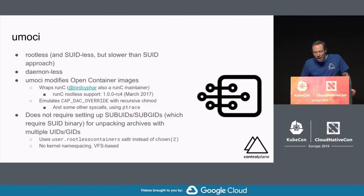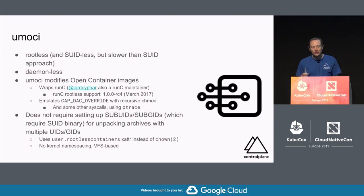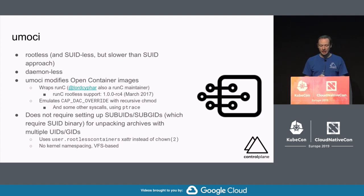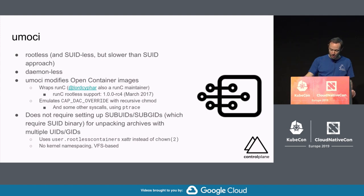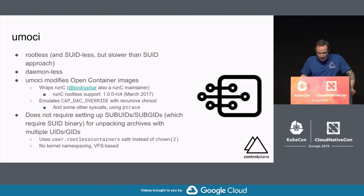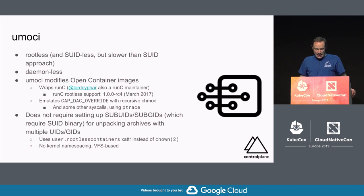umoci is one of the original OCI manipulation tools and takes a different approach. It's built by a RunC and kernel maintainer called Aleksa Sarai, and uses some funky tricks to simulate rootfulness. The fact he's a RunC maintainer means rootless features required to get this project to work have been ported back upstream into RunC — a three or four year labour of love. umoci is rootless and doesn't require any special file systems. It currently doesn't use any kernel namespacing — it's all VFS-based — and it uses extended file attributes to avoid the overhead of recursively chowning directories.